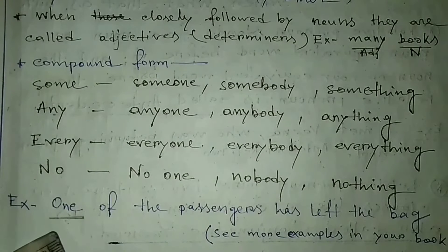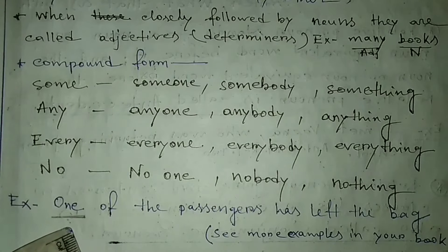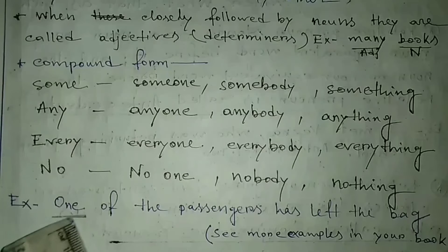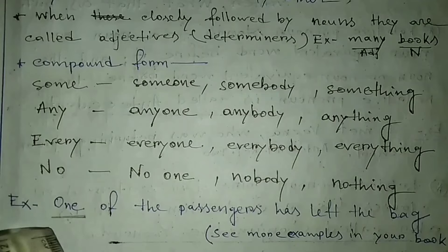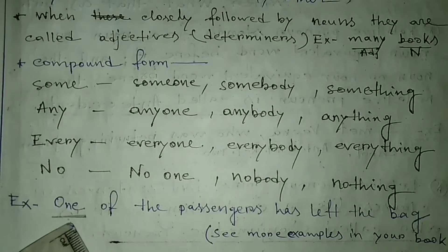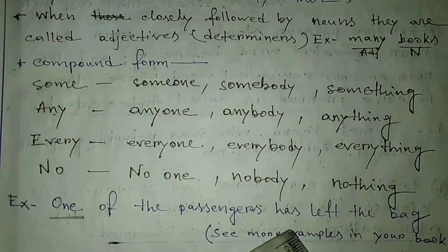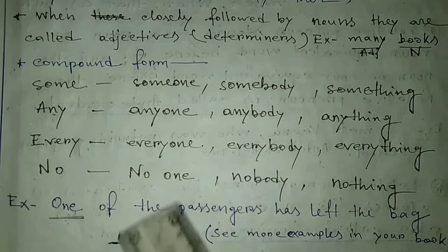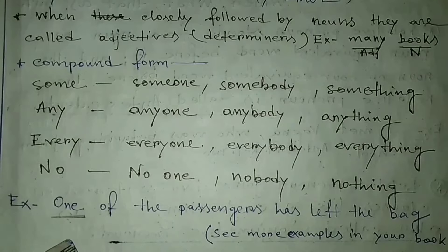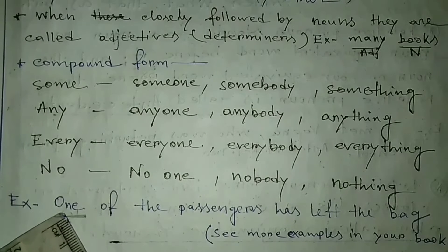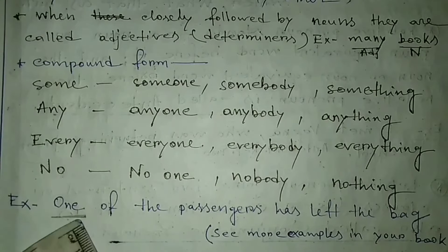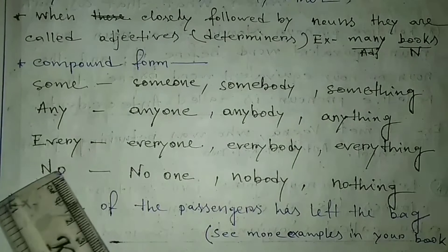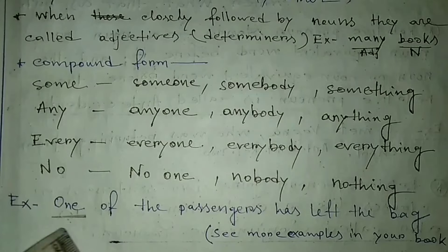Now see the example: 'One of the passengers has left the bank.' Here, 'one' is a pronoun and it is actually an indefinite pronoun. Why? Because this person is unknown. See the line again — there are many passengers, and from among the passengers, one passenger has left the bank. So we don't know who is telling the line, and the passenger who has left is unknown. That's why it is here an indefinite pronoun.